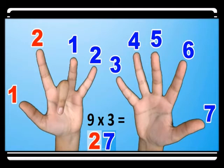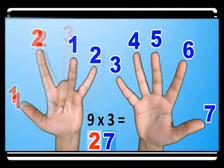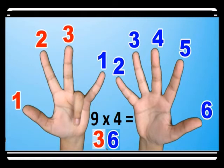Very, very easy, funny, and the easiest method. For nine times four, you count one, two, three, four — then bend the fourth finger. You have three before the bent finger and six after, so you have thirty-six.